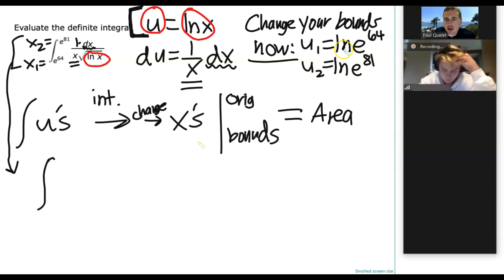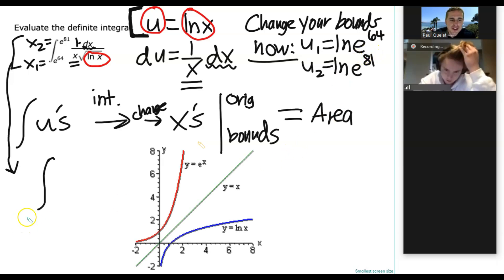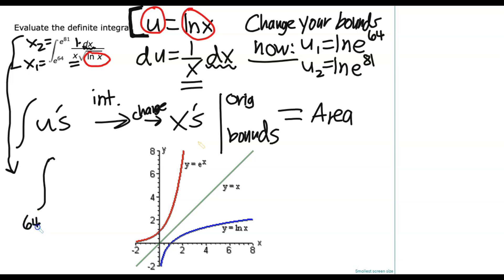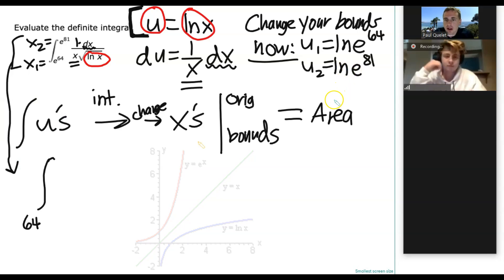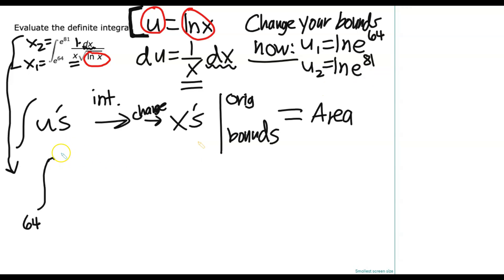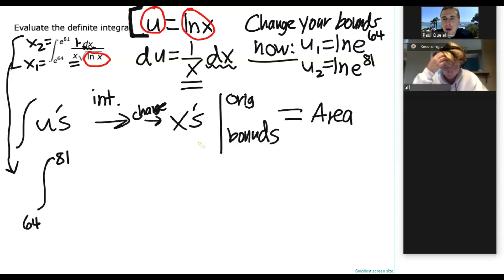Now, by the way, I want you to use your pre-calculus skills. The natural log of e to the 64th is actually a nice number. What number is that going to be? That would be 64, right? Just 64, because aren't they just inverses? Hopefully you recall that from your pre-calculus class. And then how about ln of e to the 81st? Should be 81. So we've now got new bounds.